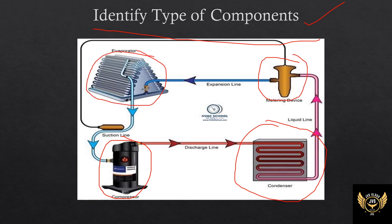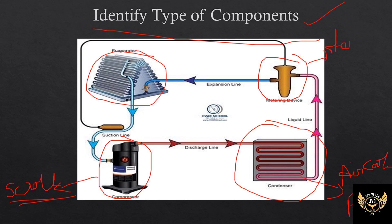So we have four types of components in the VCR system. First is the compressor — scroll type compressor. Second is the condenser — fin type condenser, air cooled, natural air cool or forced air cool. Next is the thermal expansion valve, which has one end and one bulb, operating on a temperature basis. The evaporator shown here is a fin type evaporator in an A shape.